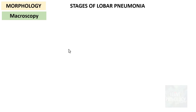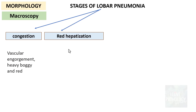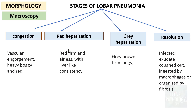Morphologically, a classic case of lobar pneumonia goes through four stages. First, the stage of congestion, where the lungs are engorged due to vascular engorgement and appear heavy and red. Second, red hepatization, where the lung is red, firm, airless, and liver-like in consistency. Third, gray hepatization, where the lungs are gray-brown and firm because RBCs are being degraded. Fourth, the resolution stage, where the infected exudate is coughed out or ingested by macrophages, or can sometimes be organized into fibrosis.